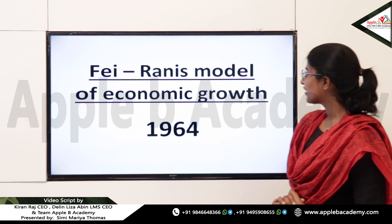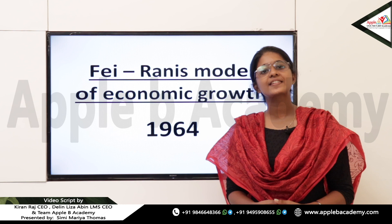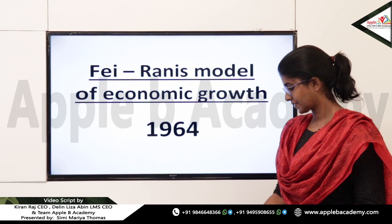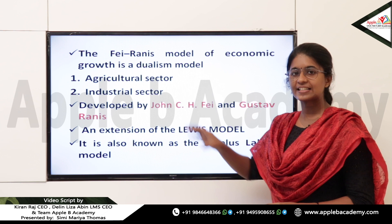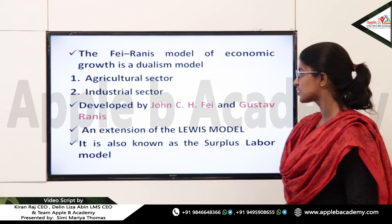Hi students. In this class we are going to discuss the Fei-Ranis model of economic growth. This model was developed in 1964 and is an extension of Lewis model on unlimited supply of labour. The Fei-Ranis model of economic growth is a dualism model, and in this dualism model we have two sectors: the agricultural sector and the industrial sector.